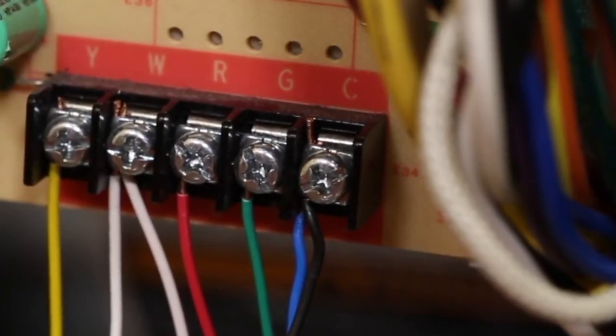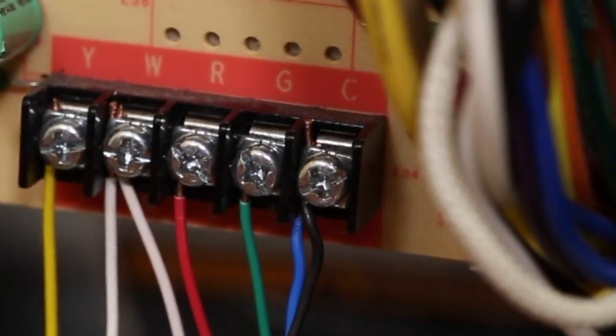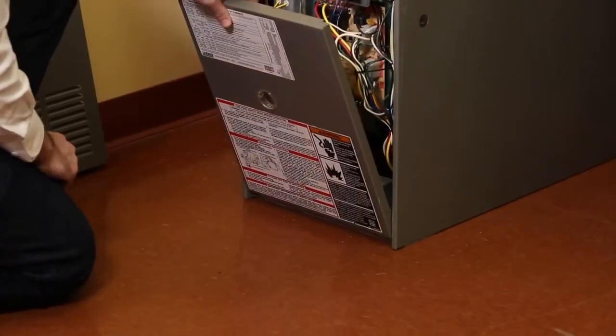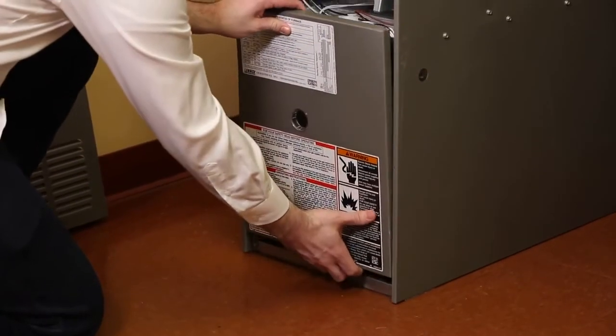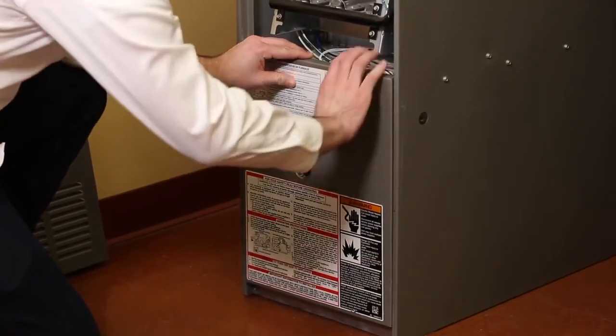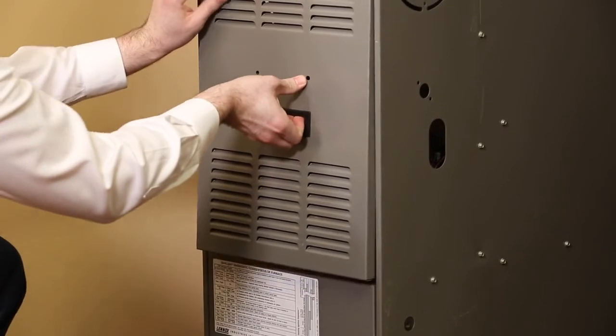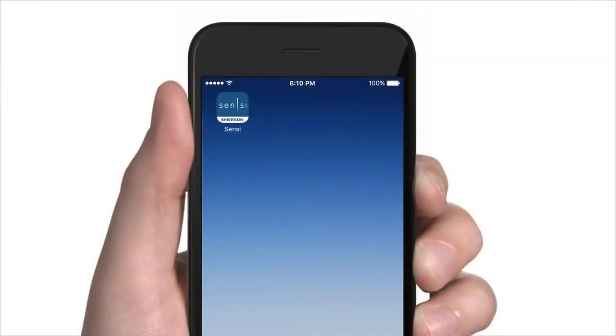If this is the case, simply add your new wire, but be sure to leave the existing wire or wires connected as well. Once secure, replace your furnace door panel. Be sure to replace it correctly, as most furnaces will not operate unless the door is on correctly.